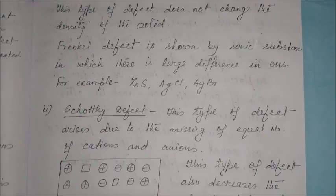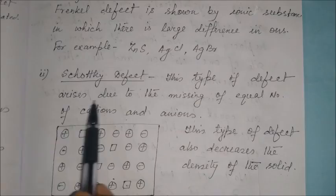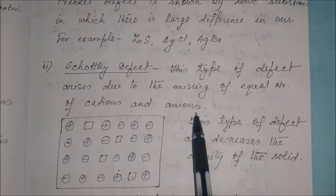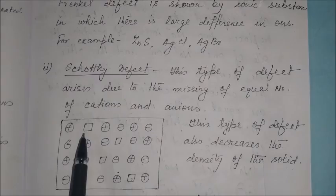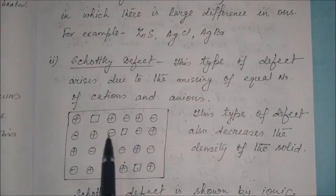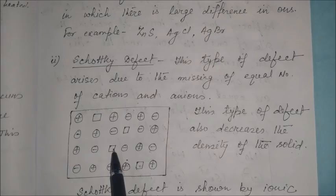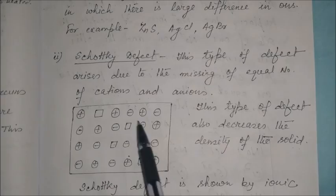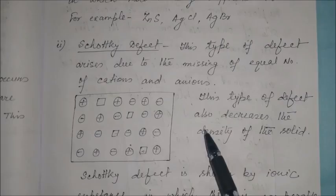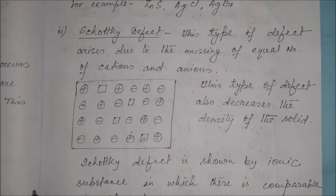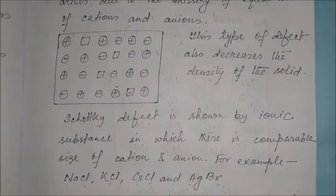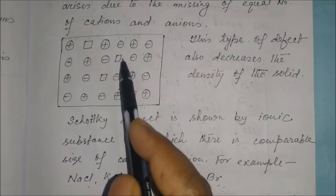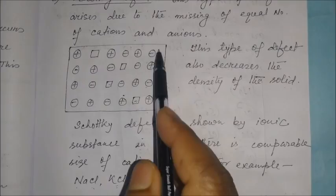Schottky defect arises due to the missing of an equal number of cations and anions. In the crystal structure, equal numbers of cation and anion sites are vacant. This type of defect decreases the density of the solid, but the electrical neutrality remains unaffected — the solid remains electrically neutral. However, conductance increases due to the vacant sites.